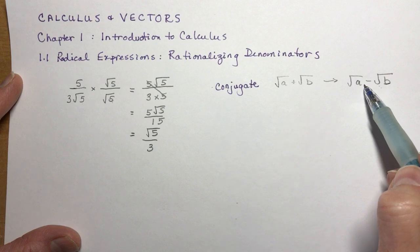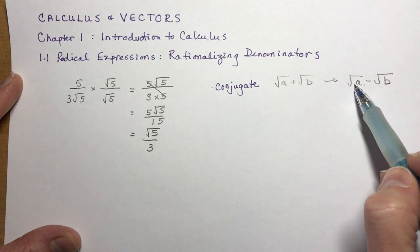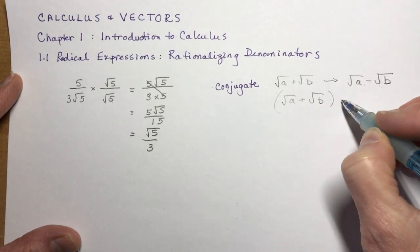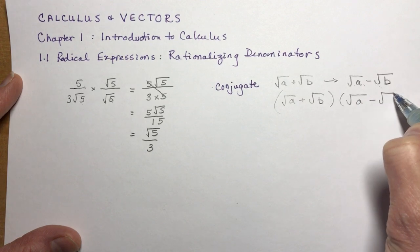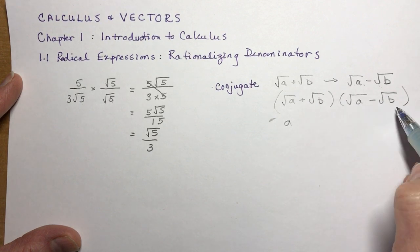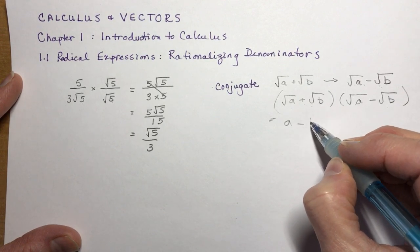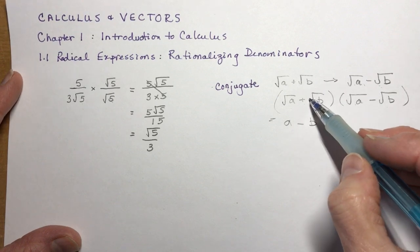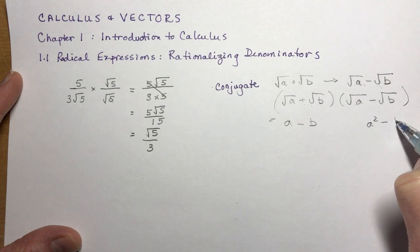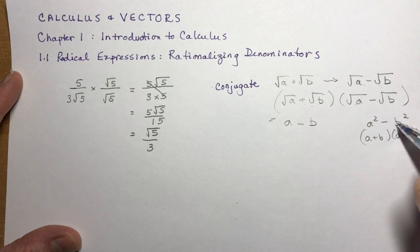And that means when you expand this, you would end up with root a times root a, which is going to be a, and then root a times root b minus it, and then plus it, and then minus b. So that shows how you can get rid of these radicals by multiplying by a conjugate. That comes from something like a squared minus b squared — you'd say that's a plus b times a minus b, and you can see how working backwards I get this term.